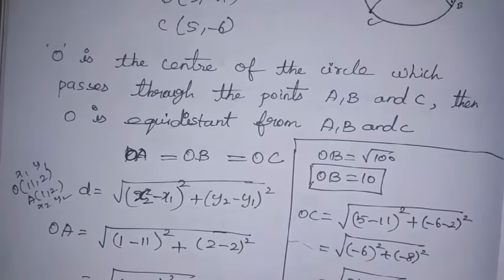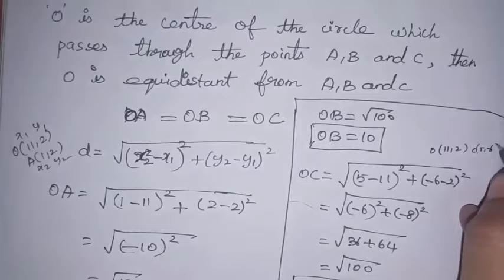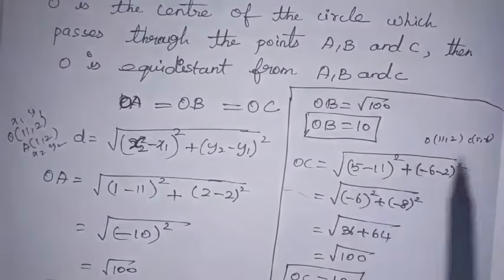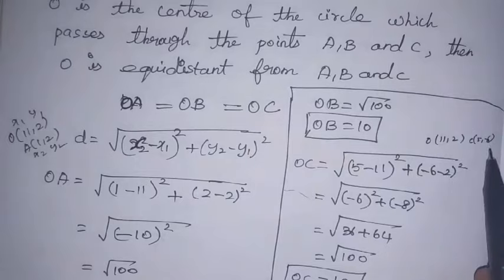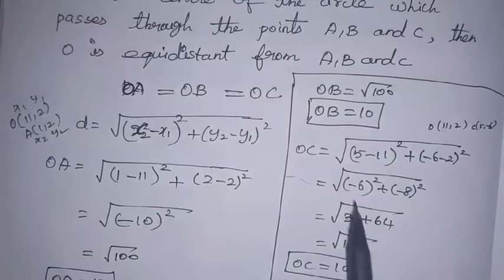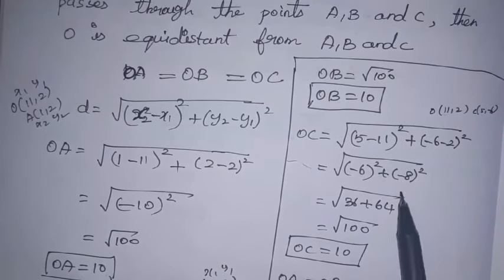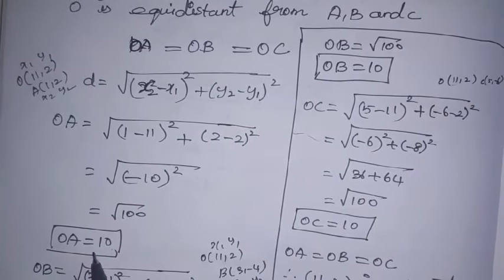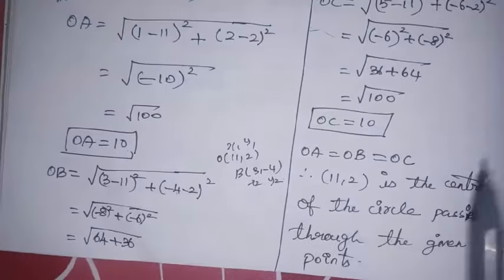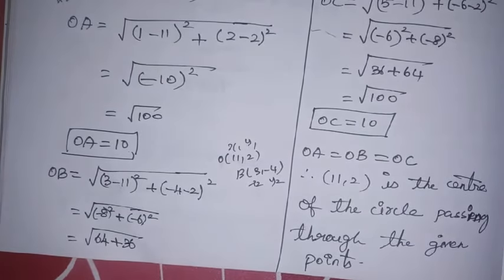Now find OC. O is (11, 2) and C is (5, −6). OC = √[(5 − 11)² + (−6 − 2)²] = √[(−6)² + (−8)²] = √[36 + 64] = √100 = 10 units. Since OA = OB = OC = 10 units, therefore (11, 2) is the center of the circle passing through the given points. The radius is 10 units.